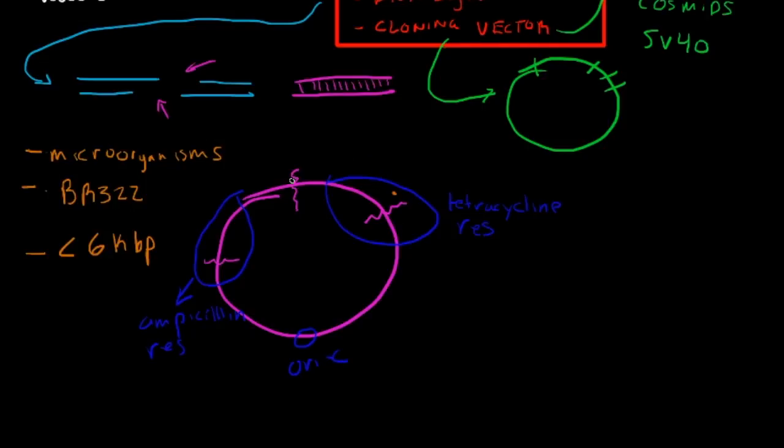You can see here we have a cut site that's not involved in the tetracycline or the ampicillin resistance. So if you wanted to insert a piece of foreign DNA into this plasmid and see what happens after you insert it into a bacterial host, you would try to target, let's pretend that this is the ECO R1 cut site.